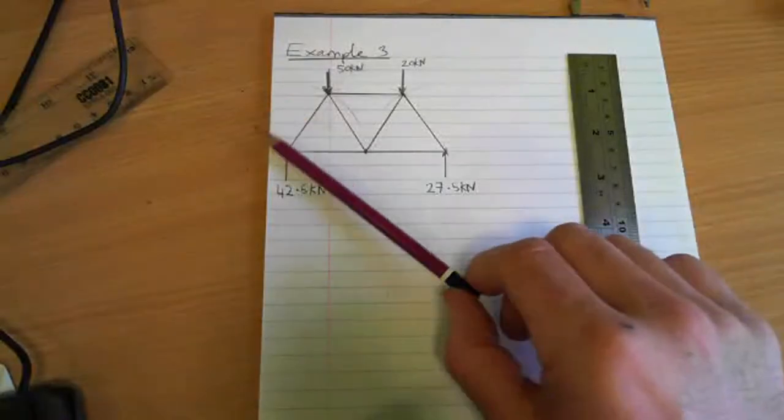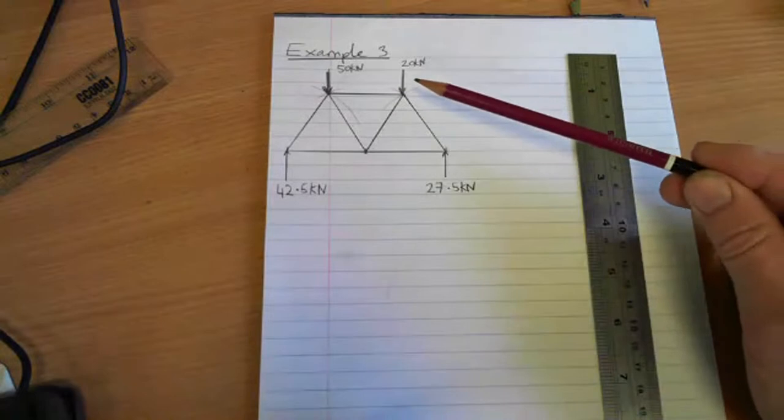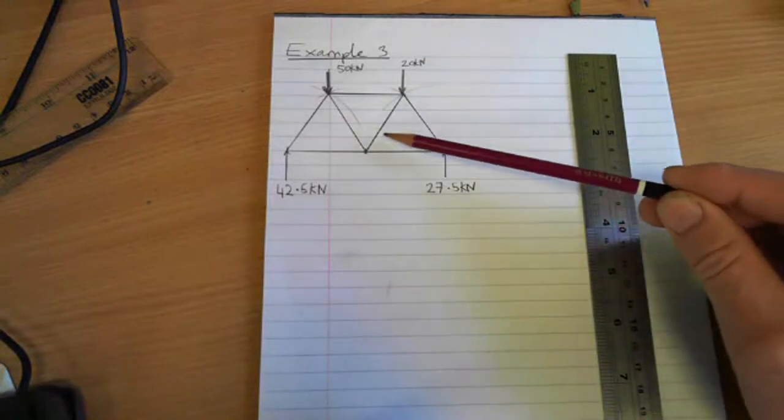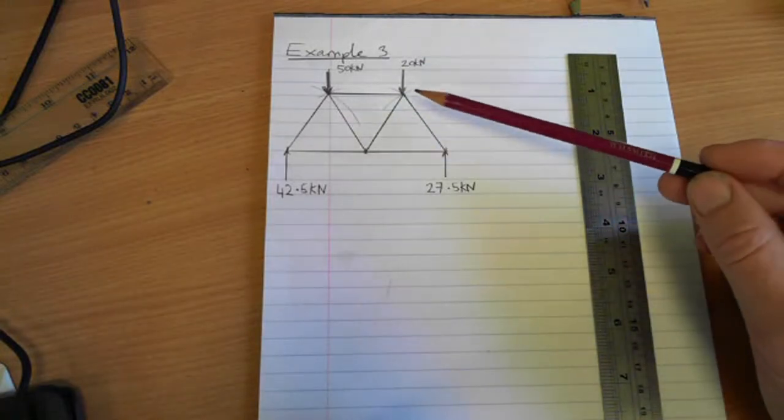Okay, this is example three of Bow's notation, so slightly more complicated now because we've got a pin-jointed frame there, a bit like the one on a bicycle, but a different geometry.